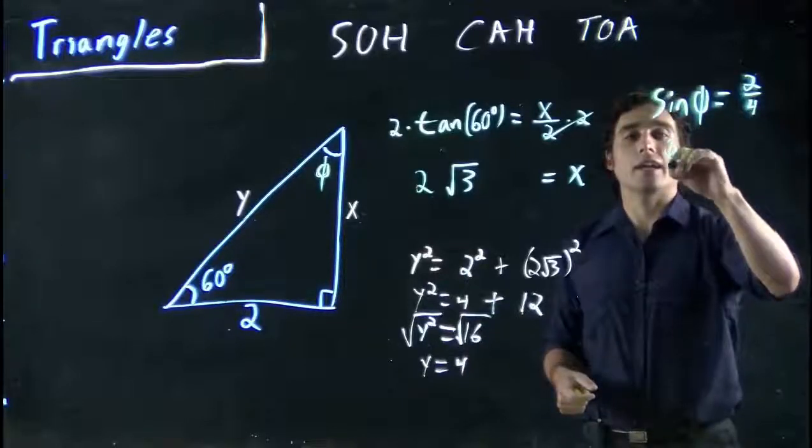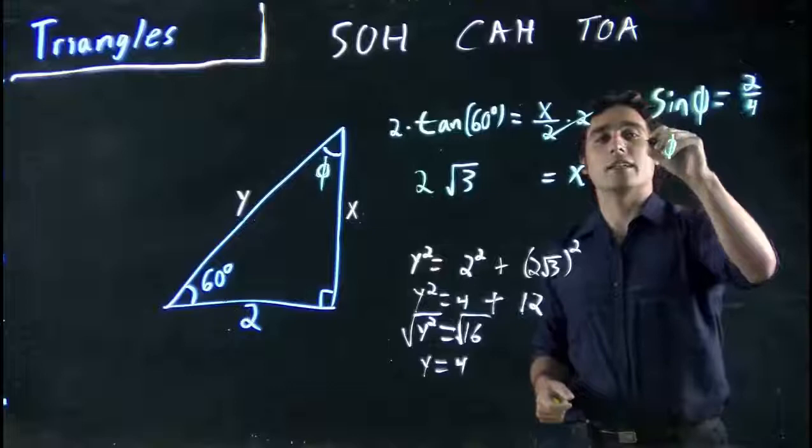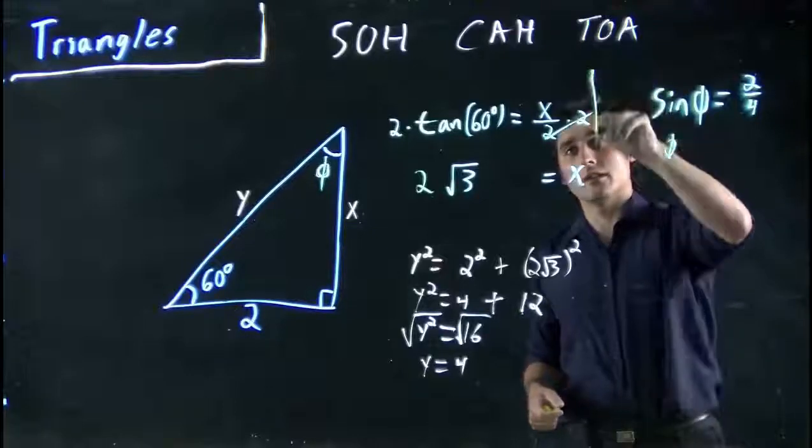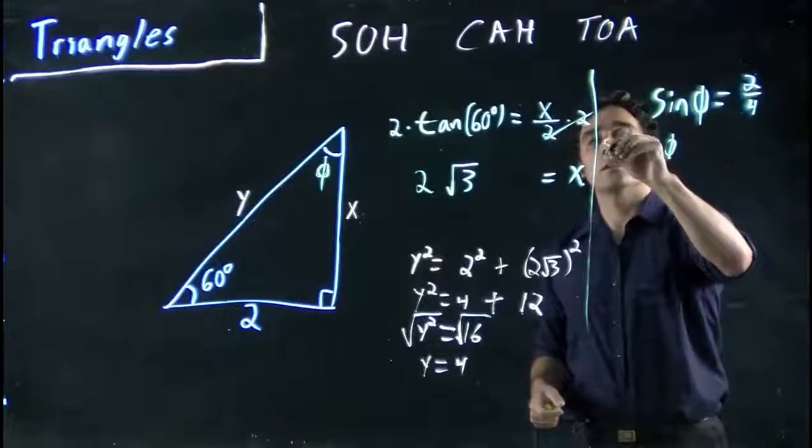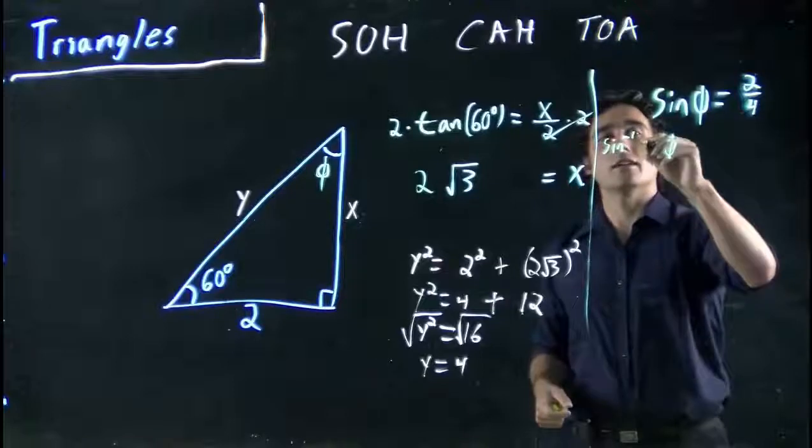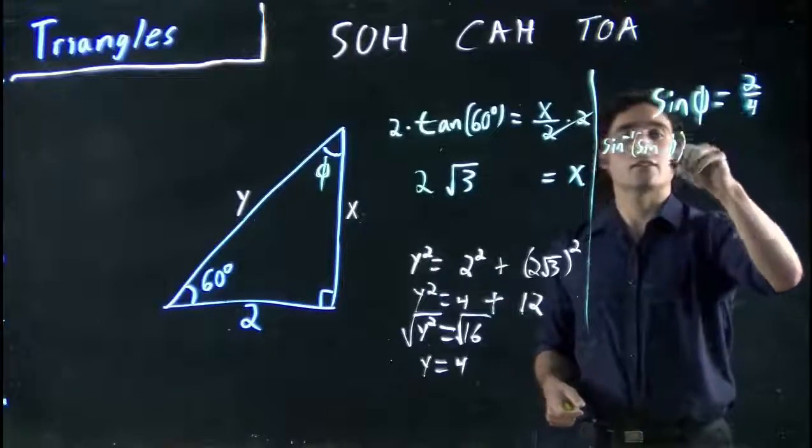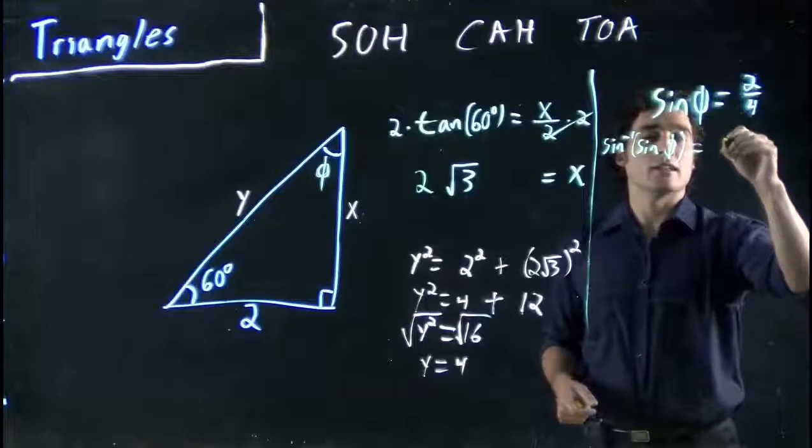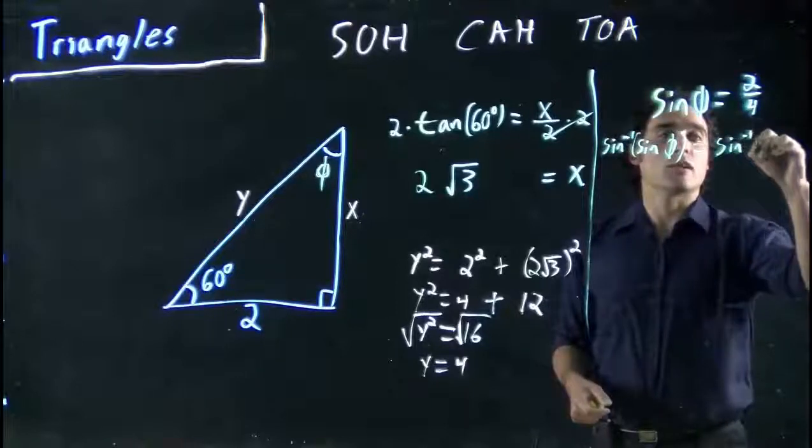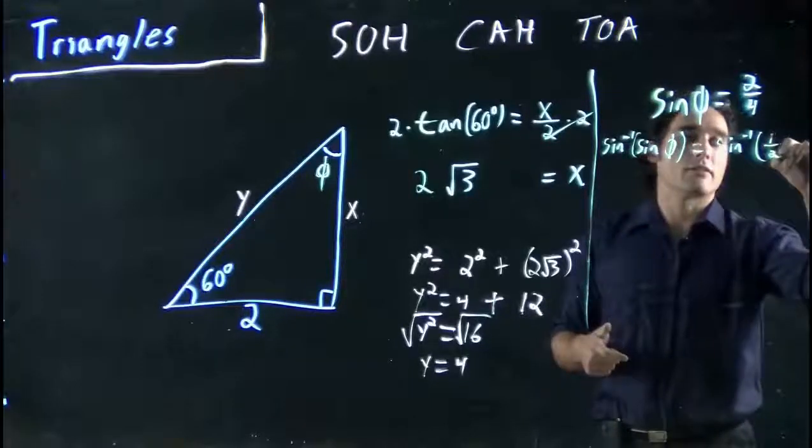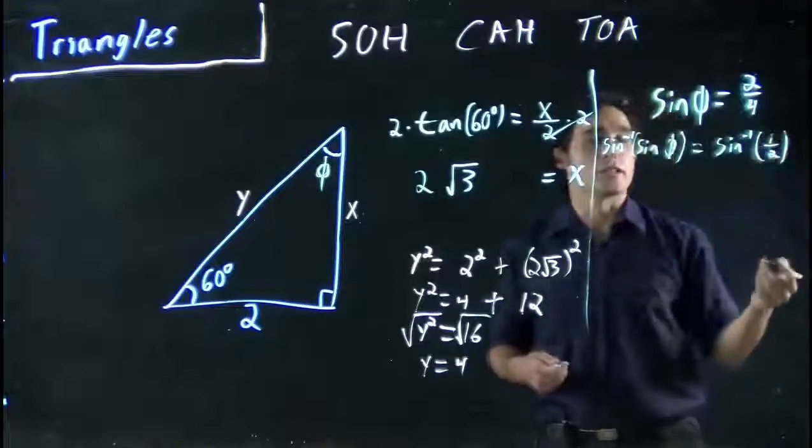So in other words, phi, as always, I want to take the, get it on its own. Let's draw a line. So, sine to the minus 1 of sine of phi, to cancel it and leave me with phi, is equal to sine to the minus 1 of, well, this is in essence 1 half. 2 divided by 4 is 1 half.